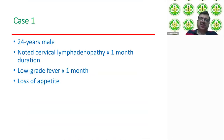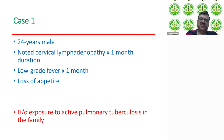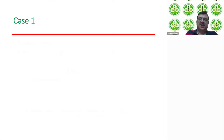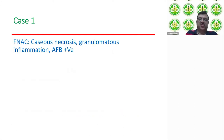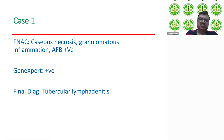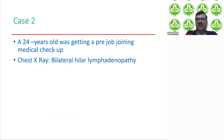Returning to our initial cases: case one — 24-year-old male with cervical lymphadenopathy, low-grade fever, and exposure to active pulmonary tuberculosis in the family. FNAC of the lymph node showed caseous necrosis, granulomatous inflammation, and AFB was positive. Gene Xpert was also sent and was positive. Final diagnosis was tubercular lymphadenopathy and the patient was referred to a DOTS center for ATT.